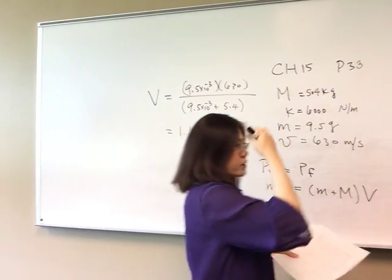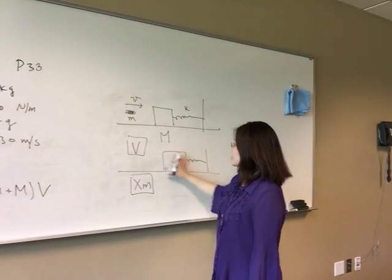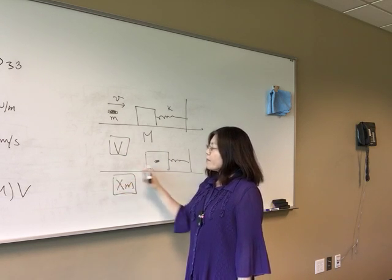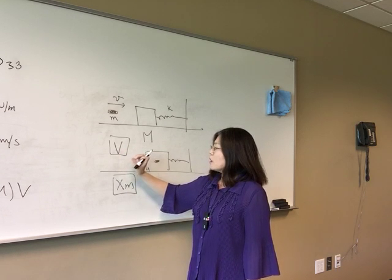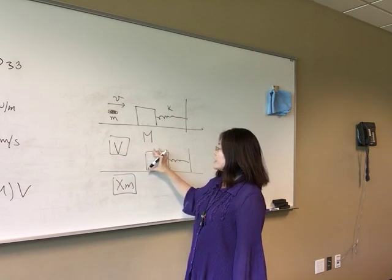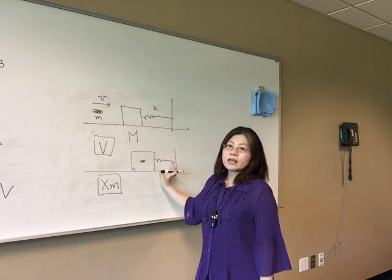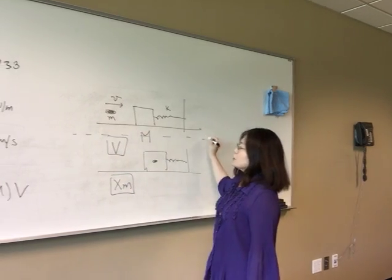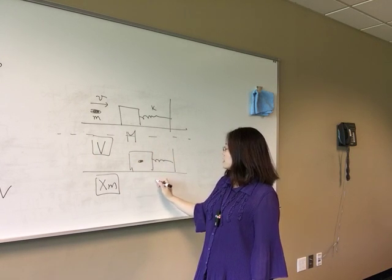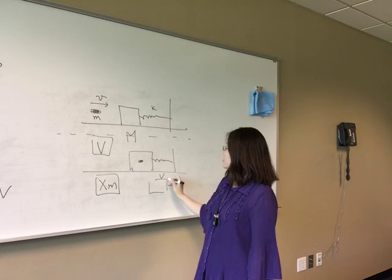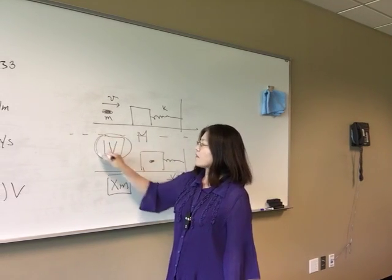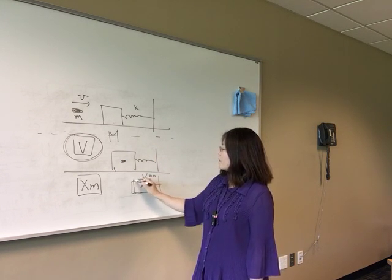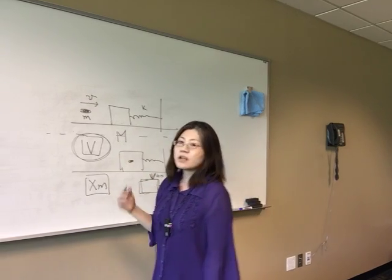After collision, the block and embedded bullet move together at 1.106 meters per second. To find maximum displacement, we use conservation of energy: the kinetic energy converts entirely to spring potential energy when the system momentarily stops. So one-half times combined mass times V squared equals one-half times k times xm squared.